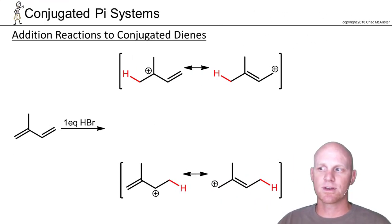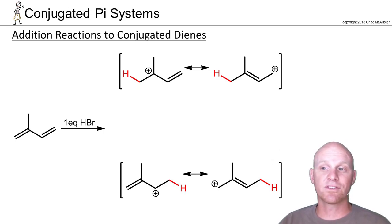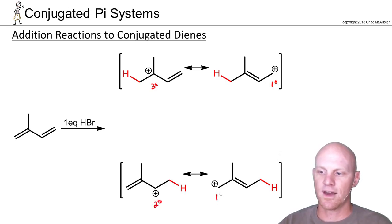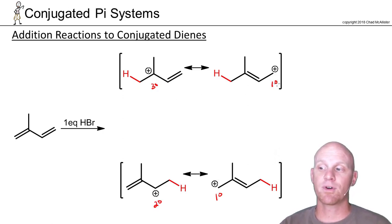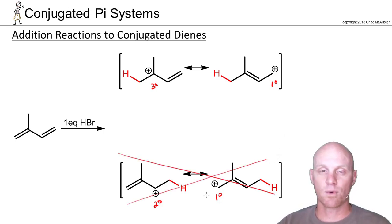The two resonance-stabilized carbocations are not equally stable. Whichever is more stable will lead to the major products — we may get minor products from the other, but we won't consider them. One carbocation shares its positive charge between a tertiary and a primary carbon; the other shares it between a secondary and a primary carbon. Since more substituted carbocations are more stable, sharing between tertiary and primary is preferred, so we focus on that one.